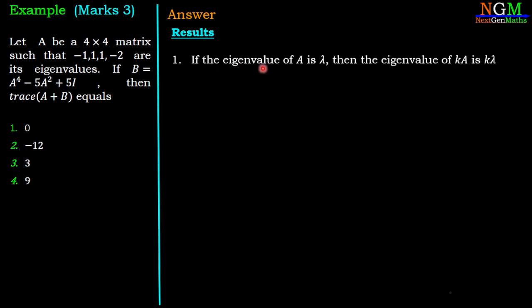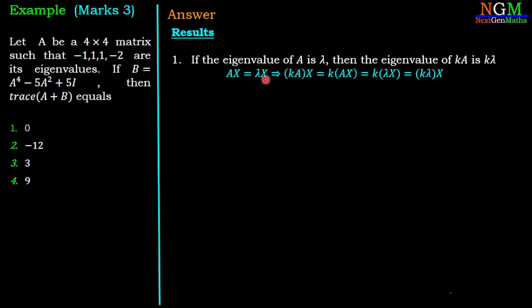Now, if the eigenvalue of A is λ, then the eigenvalue of KA is K times λ. We can easily prove it: if AX = λX for some X, then KAX = K·AX = K·λX, so Kλ is the eigenvalue of KA.